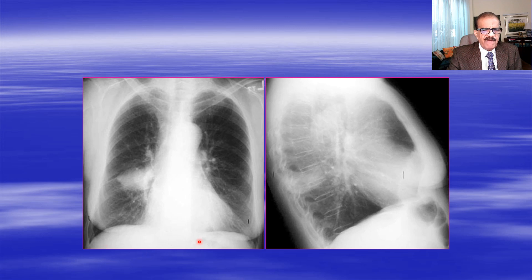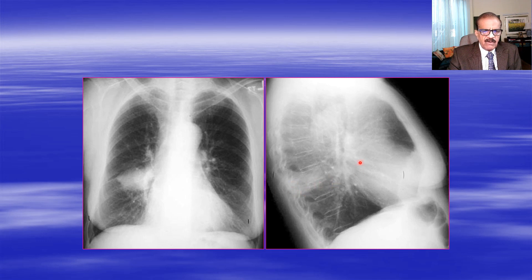Here is somebody having a PA film and right lateral film. There's an opacity here, and if you look at this line going this way, this is perhaps an encysted effusion in the transverse fissure - the same is visible on the lateral view. Actually this appears to be along the oblique fissure. This opacity is an indicator of pleural effusion - an encysted effusion, perhaps along the posterior chest wall.